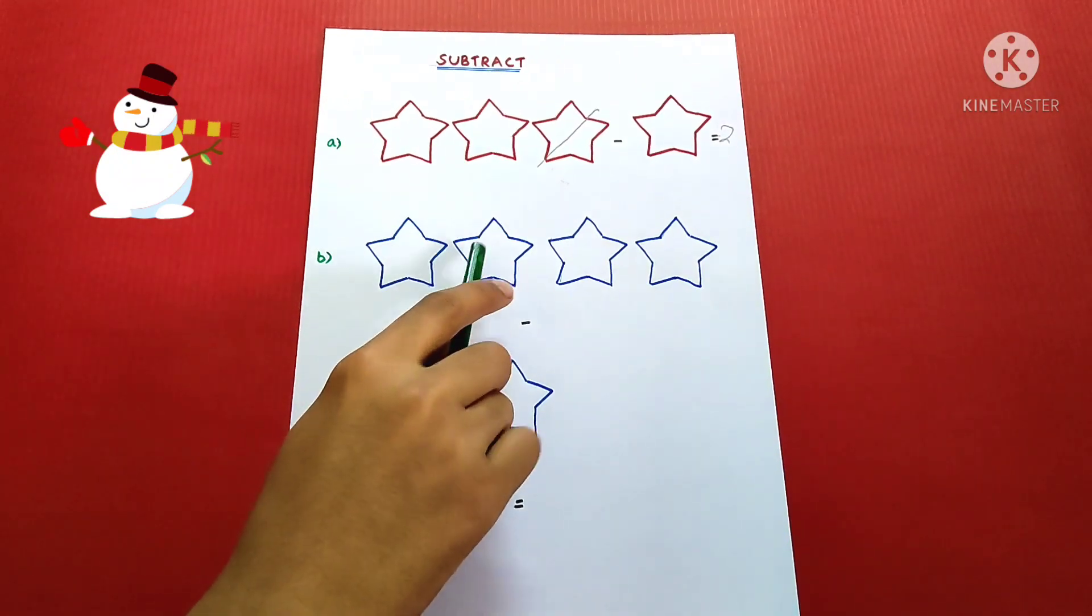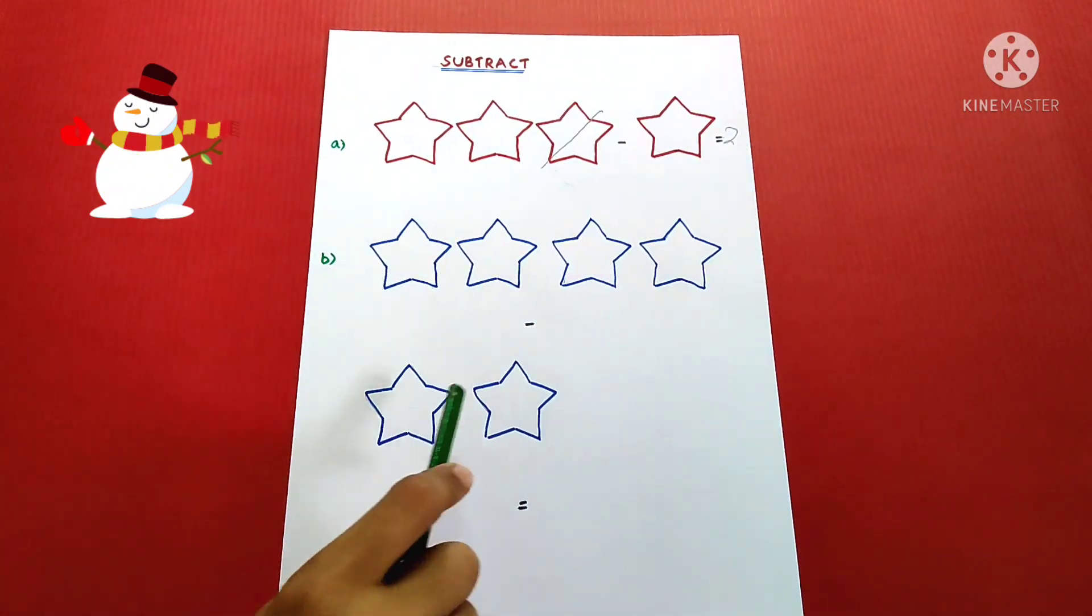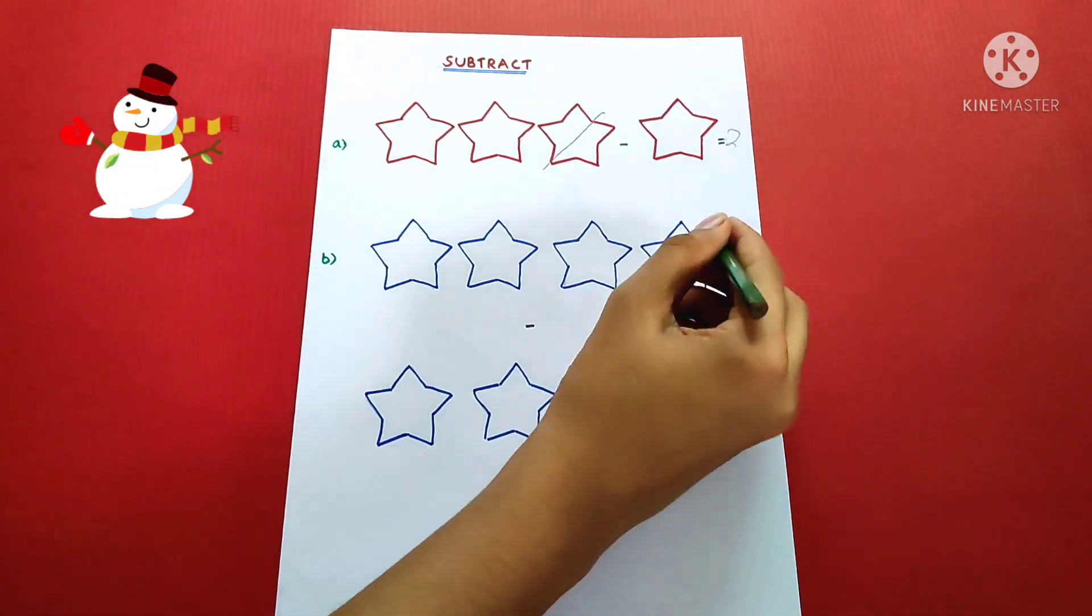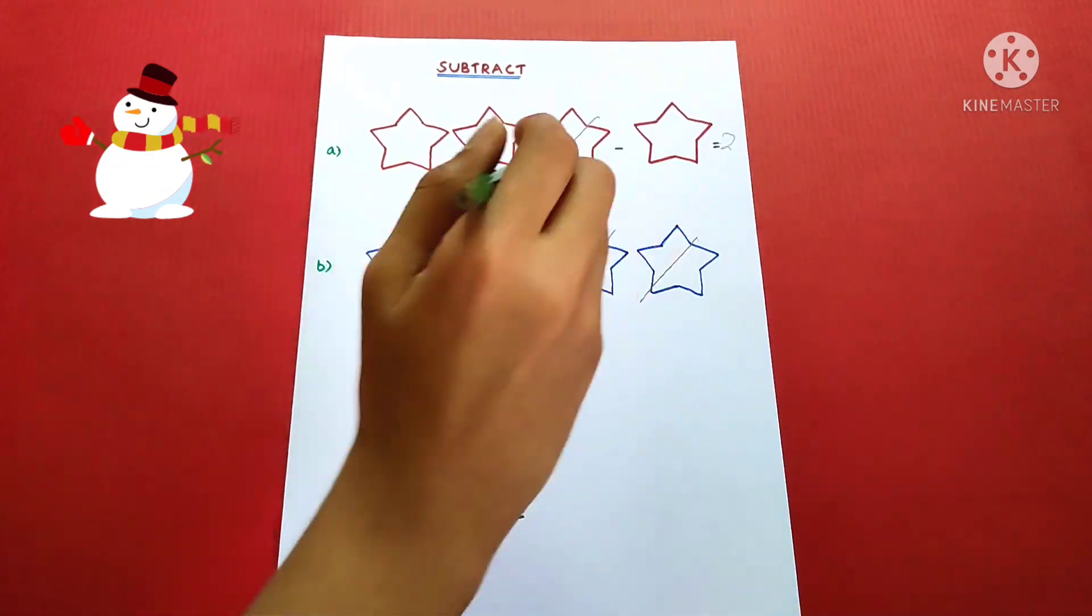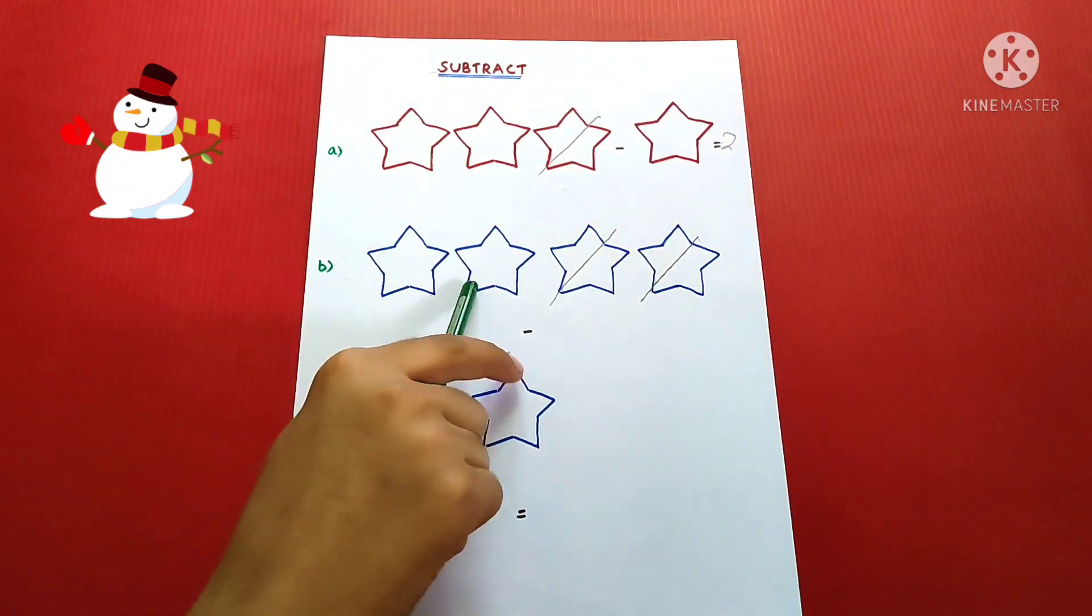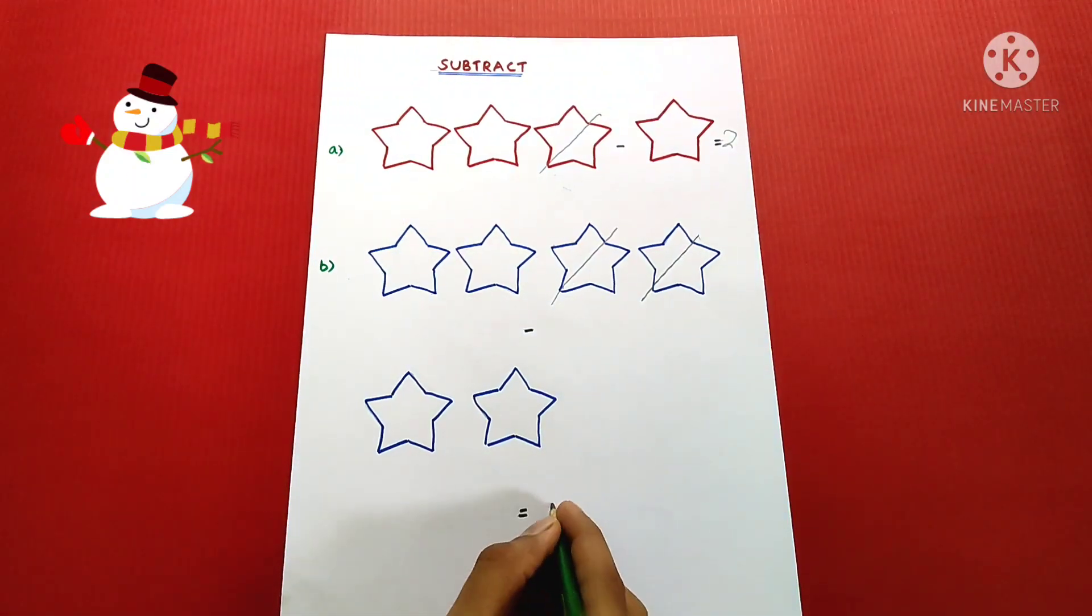3 minus 1, so we have to cut 1, equals 2. 4 minus 2, so we have to cut 2, equals 2.